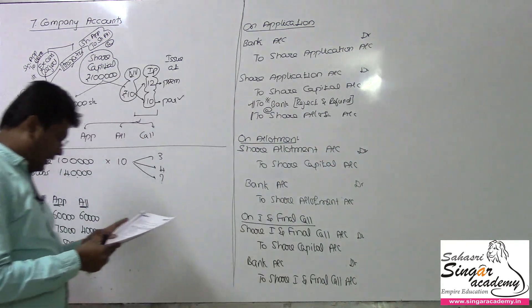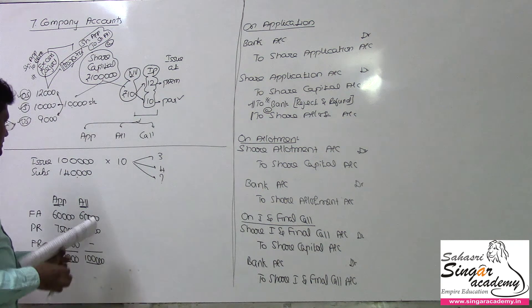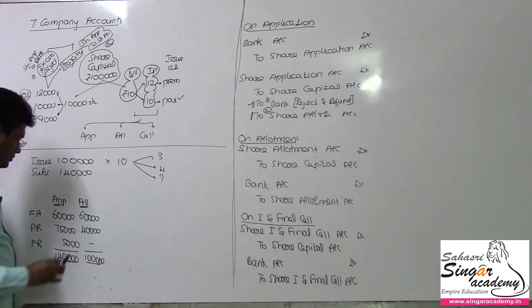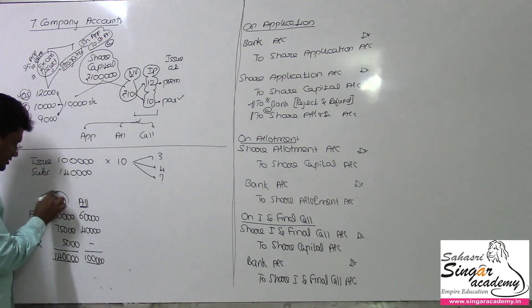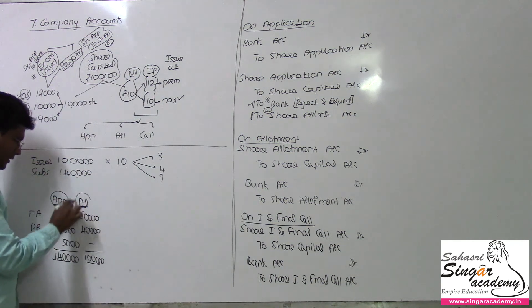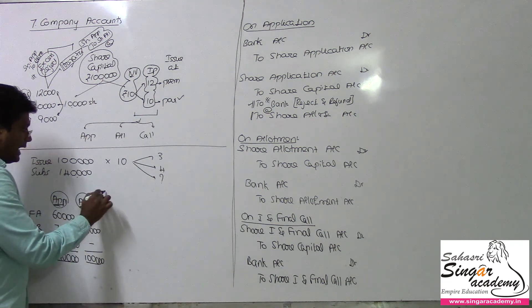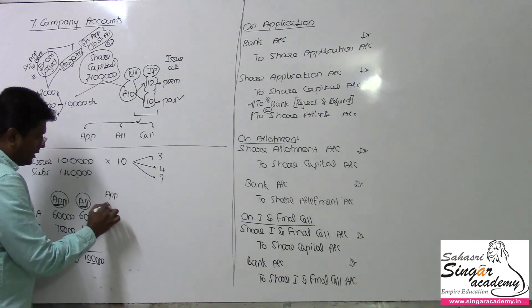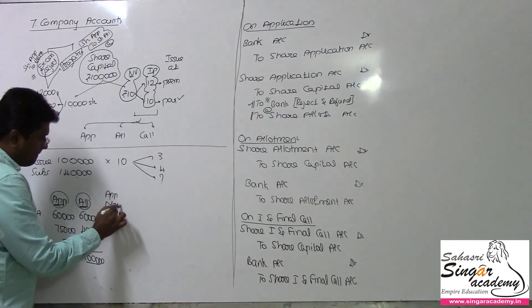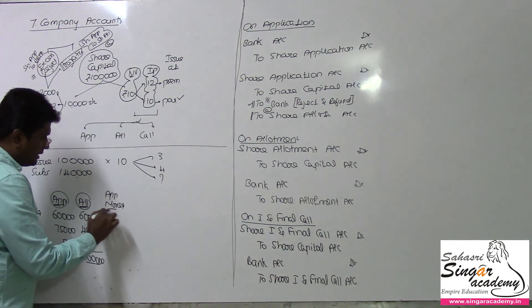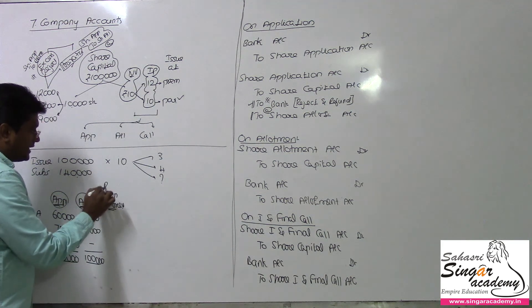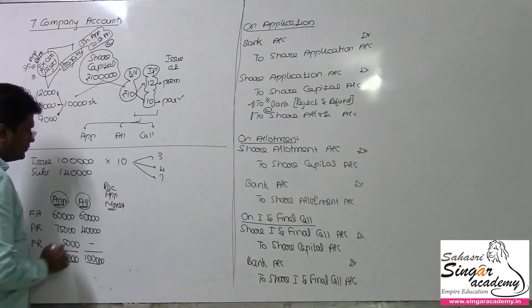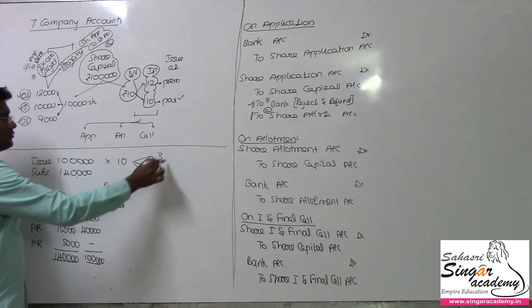Now, what is the application money received? How do we calculate the application money? The allotment number is used to figure out the application money received.